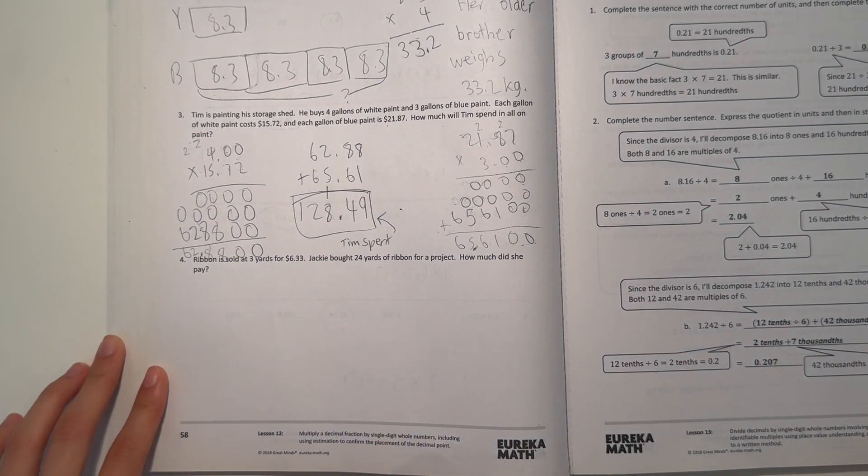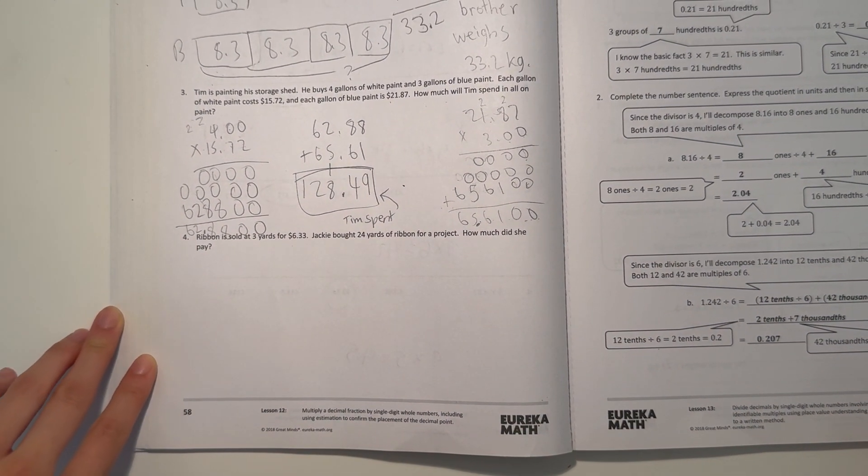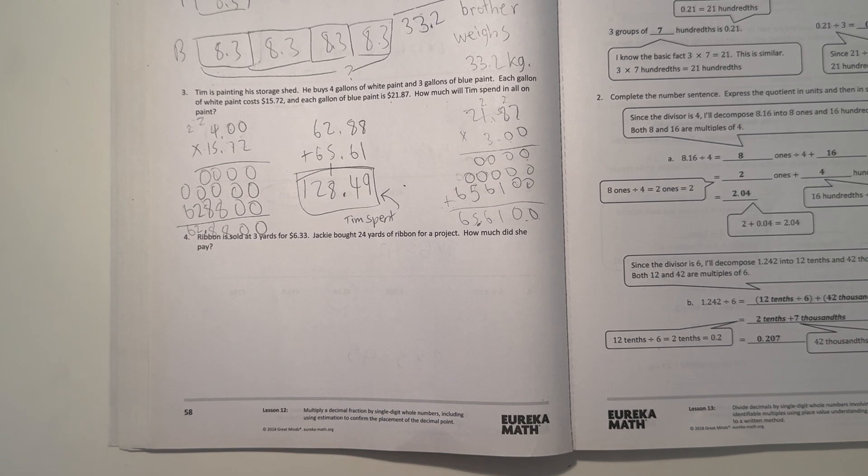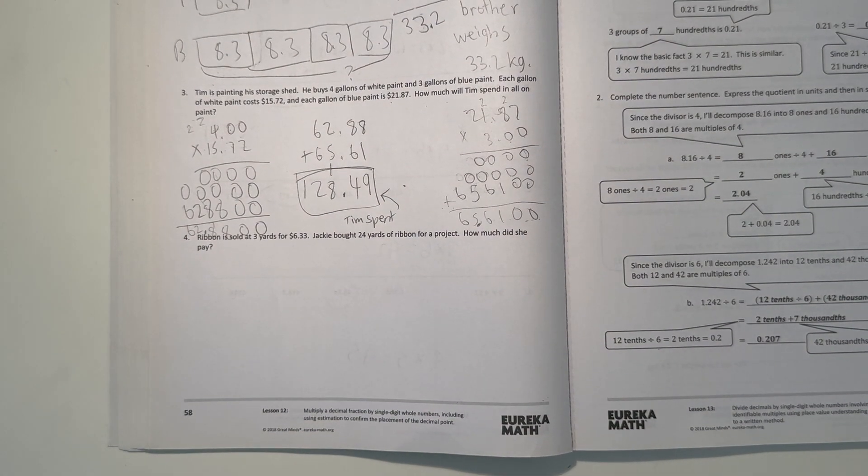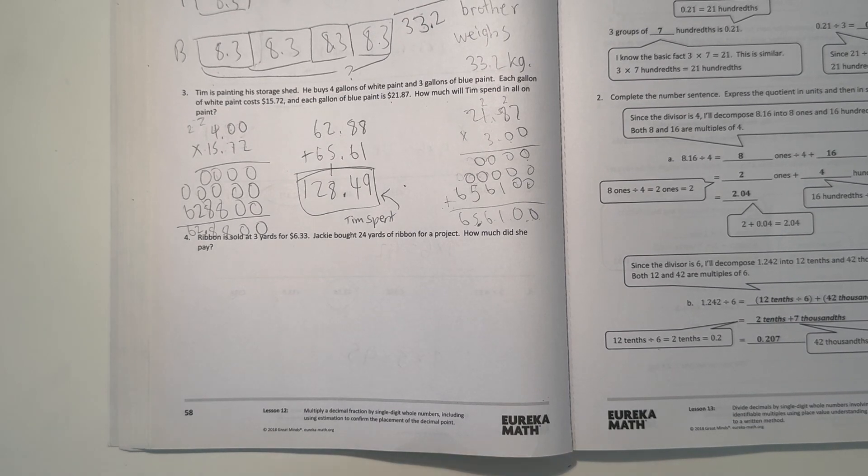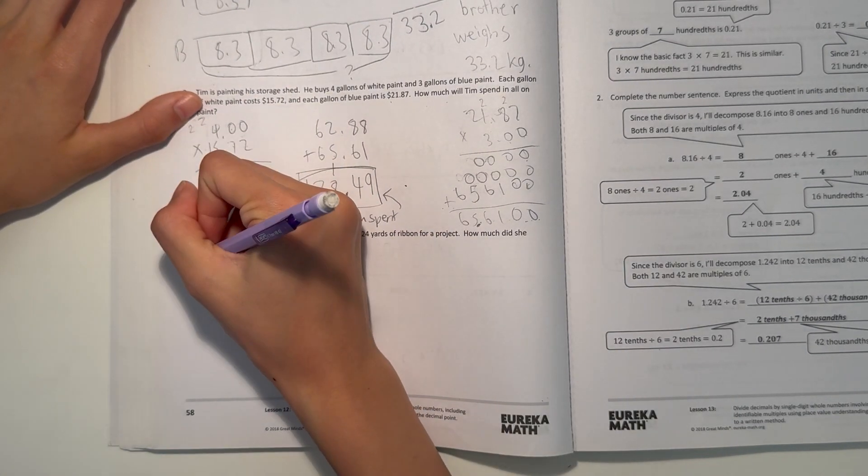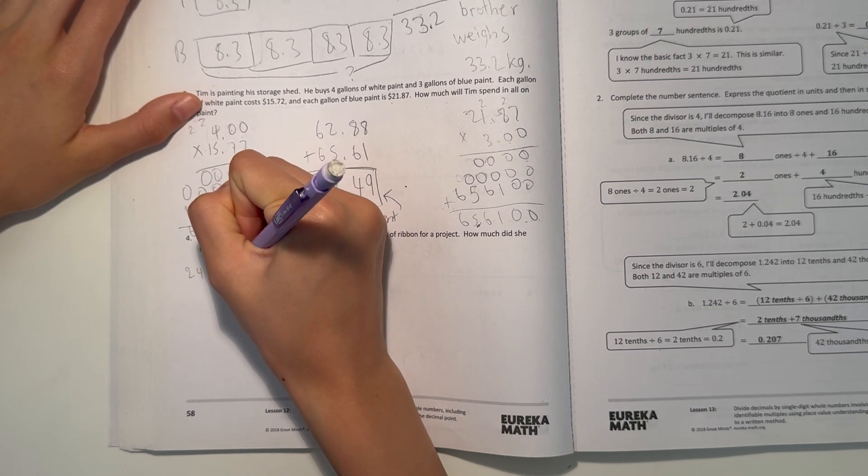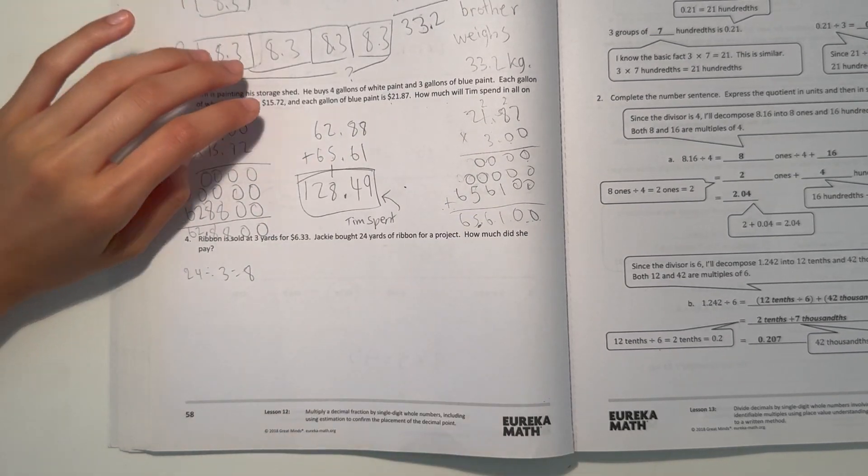Alright, and number 4. Ribbon is sold at 3 yards for $6.33. Jackie bought 24 yards of ribbon for her project. How much did she pay? So every 3 yards you buy is $6.33. So since she bought 24, 24 divided by 3 equals 8. So then to find our answer, we do 8 times 6.33.